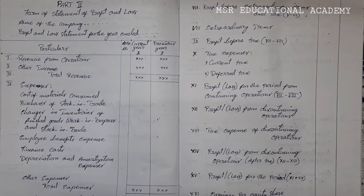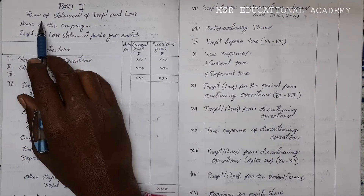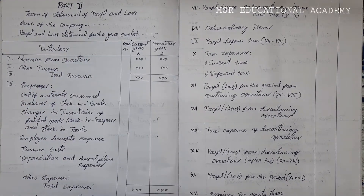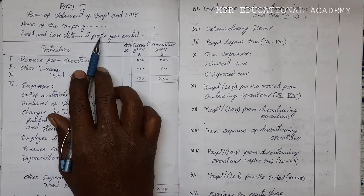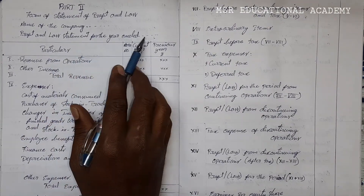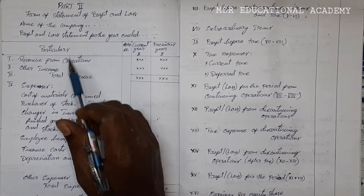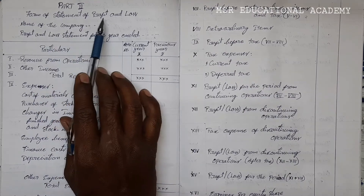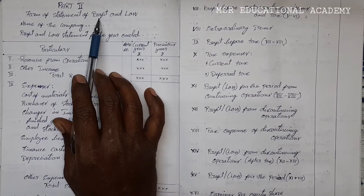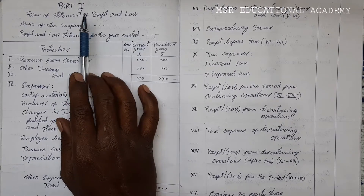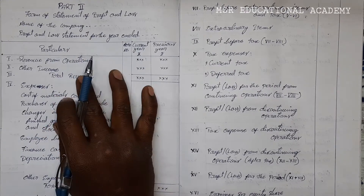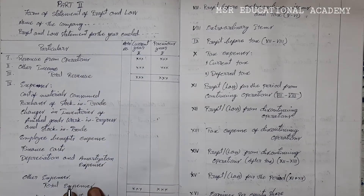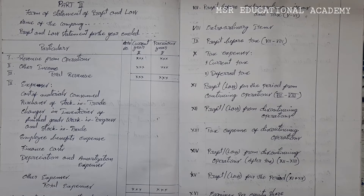Next is Part 2 — the form of Statement of Profit and Loss. This includes the name of the company, the profit and loss statement for the year, date, and so on. In this Part 2, it is a profit and loss statement, but not an account. We should mention it is a statement, because in this profit and loss statement there are no debits and credits. A prescribed format is given by Companies Act 2013.